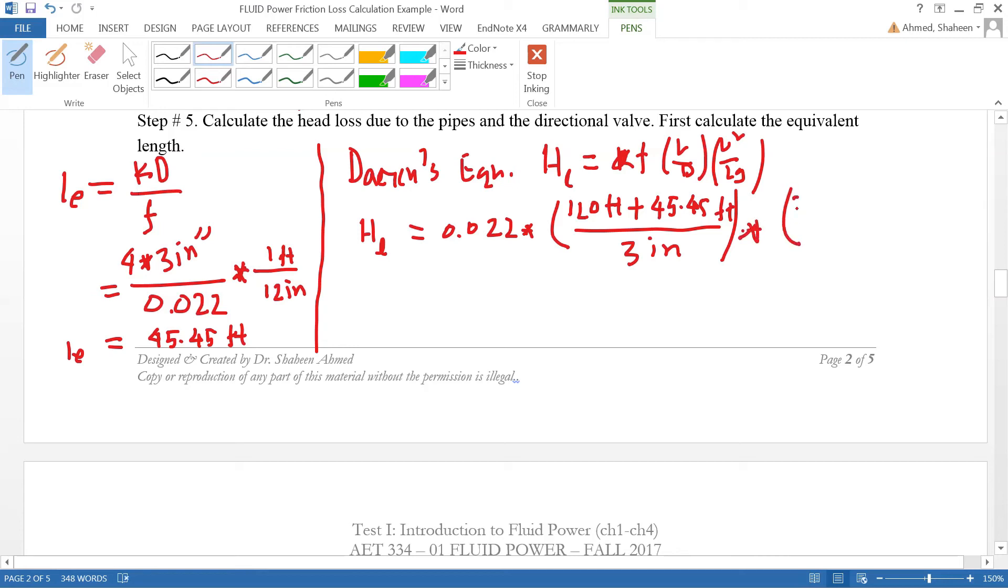The velocity was calculated earlier as 2.27 feet per second, and then 2 times the gravity constant 32.2 feet per second squared. This velocity part is going to